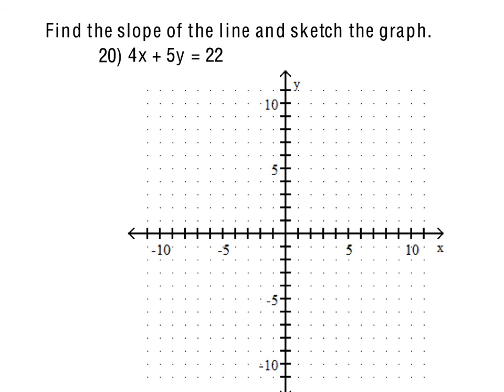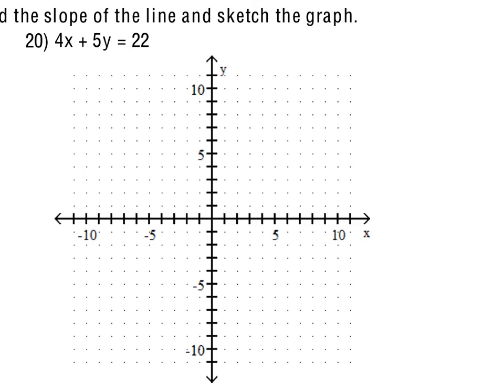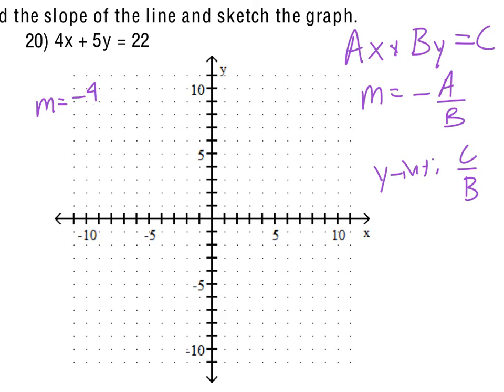Number 20, find the slope of the line, sketch the graph. So we've got 4x plus 5y equals 22. Now there is a little trick that we can use when we have the standard form of an equation for a line. The slope is the opposite of a over b. Or if you wanted to, you could just rewrite that in slope-intercept form. The y-intercept also is just the c value, in this case 22, over b. So y-intercept is c over b. But at the same time, that's not going to be a very nice point in this case. In this case, though, the slope would actually be negative 4 over 5.